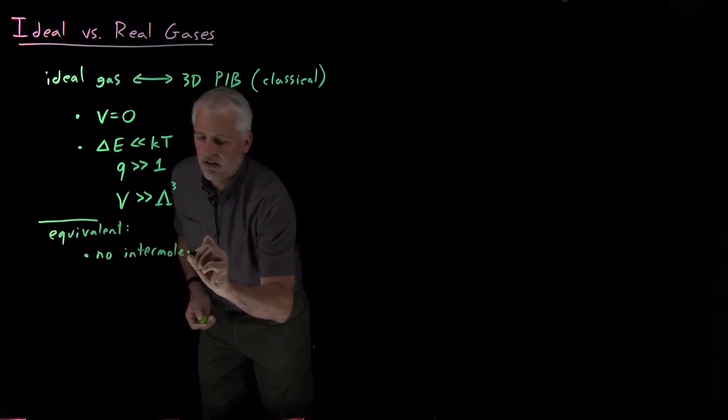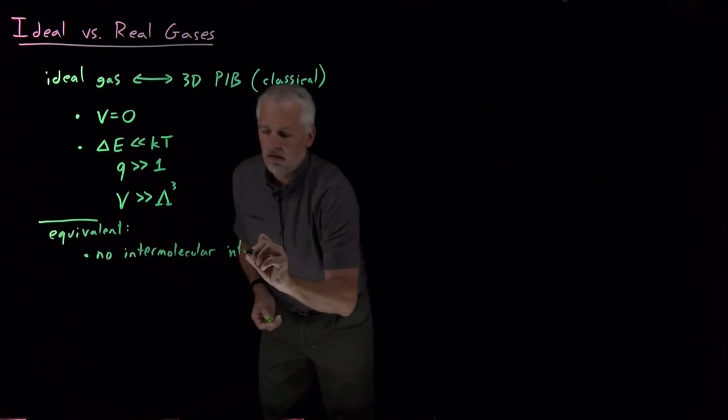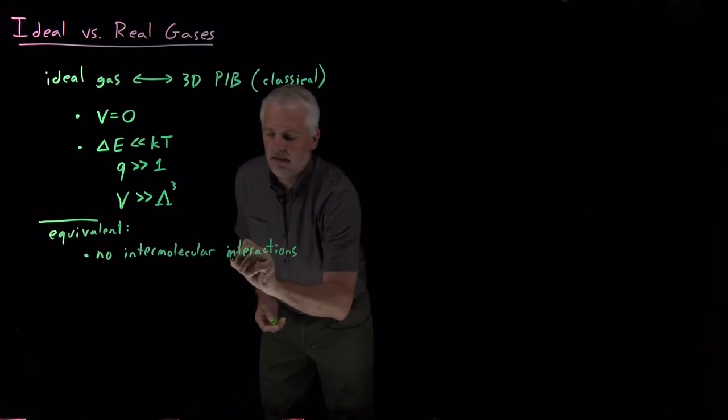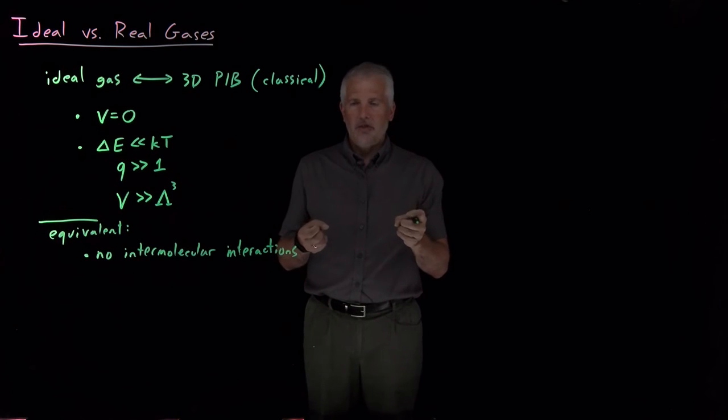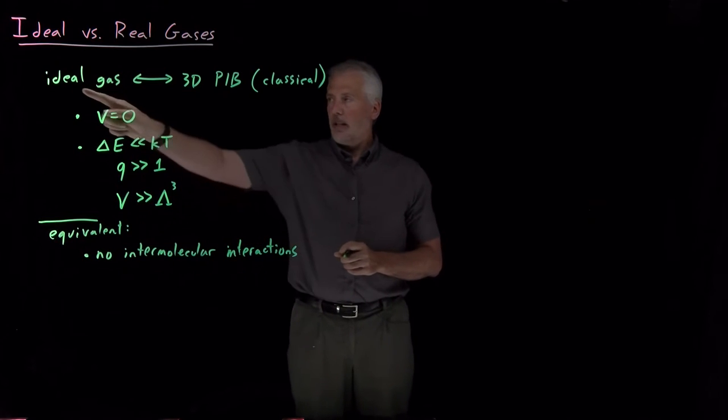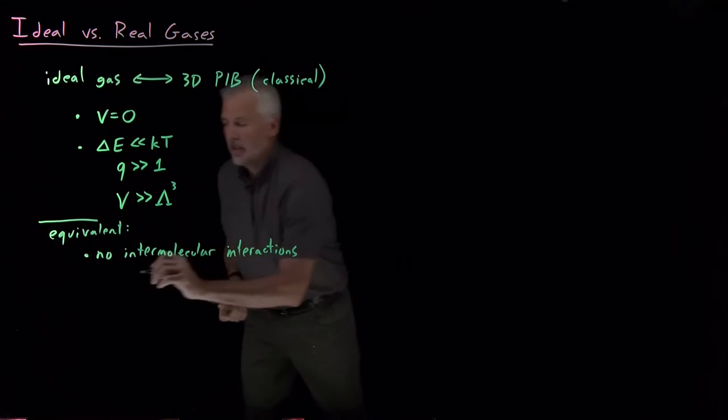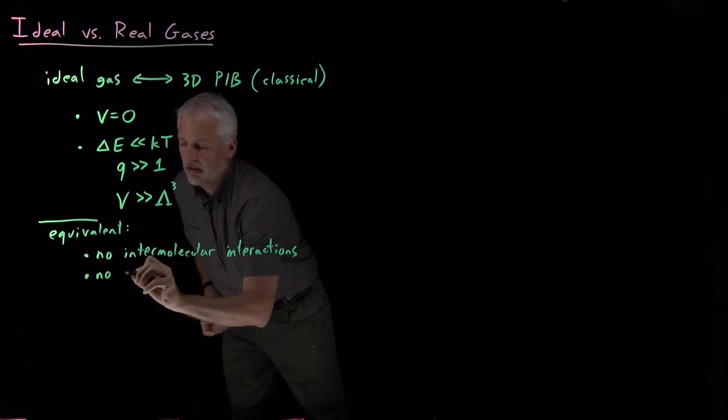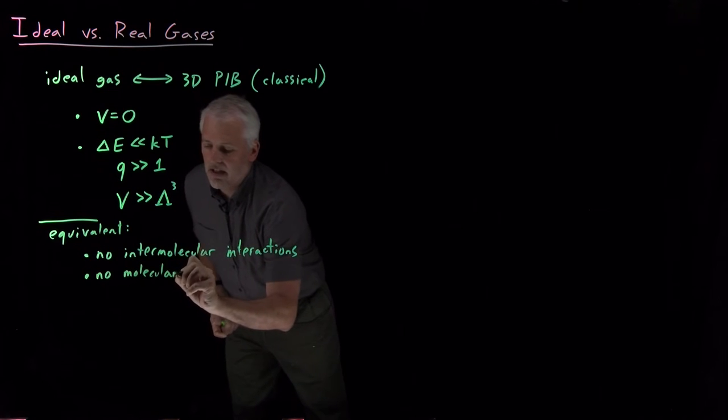So one condition for a molecule behaving well as an ideal gas is that it shouldn't have any intermolecular interactions. If there's strong intermolecular interactions between two molecules, then they won't behave ideally. And a truly ideal gas is one that has no intermolecular interactions at all.